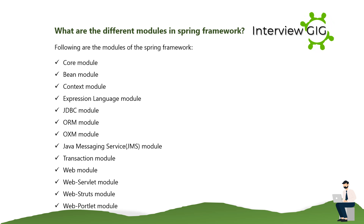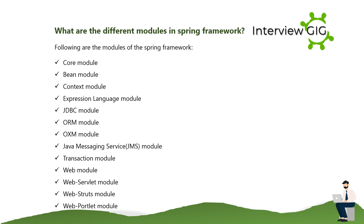What are the different modules in Spring Framework? The modules of the Spring Framework include: Core module, Bean module, Context module, Expression Language module, JDBC module, ORM module, OXM module, Java Messaging Service (JMS) module, Transaction module, Web module, Web Servlet module, Web Struts module, and Web Portlet module.